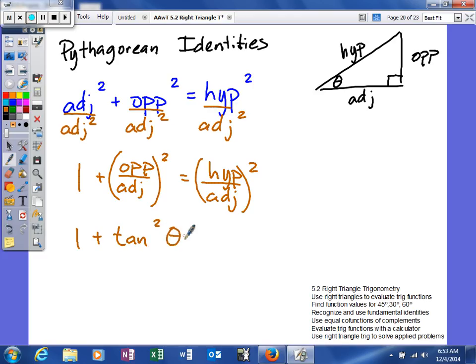And the way you square your trig function, it's not your angle squared, it's the trig function. So it's tangent squared of theta is equal to, and then we have hypotenuse over adjacent. Well, that's cosine, well, it's the reciprocal of cosine, so that's going to be the secant squared of our angle.